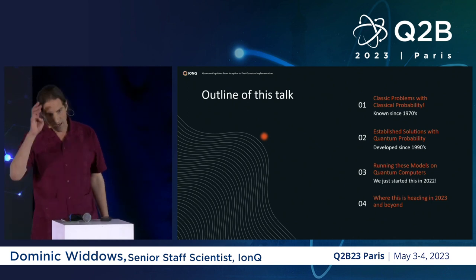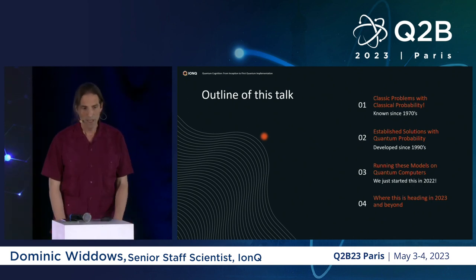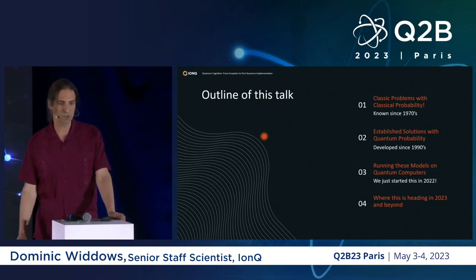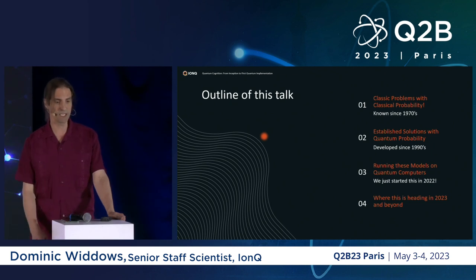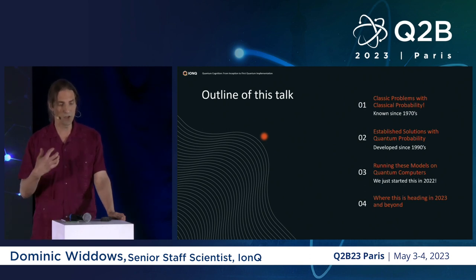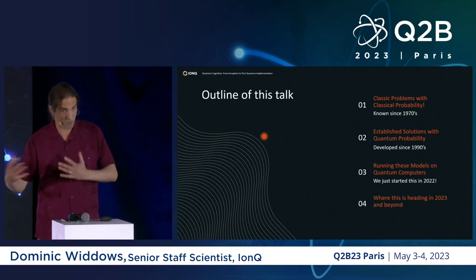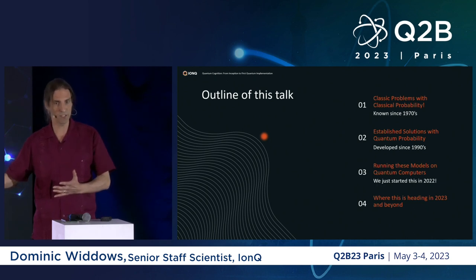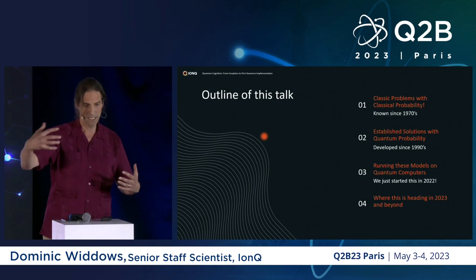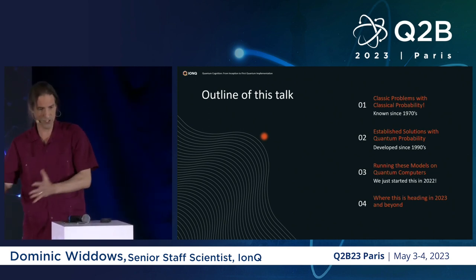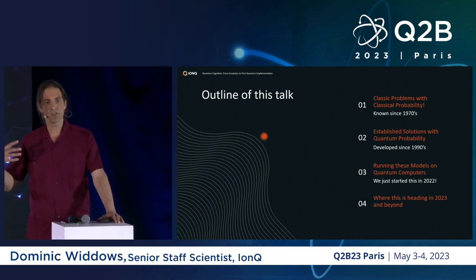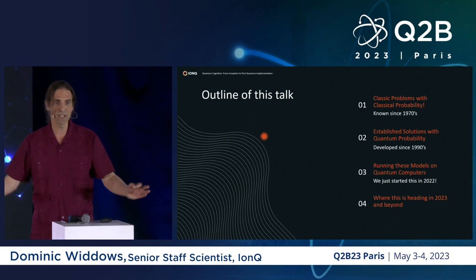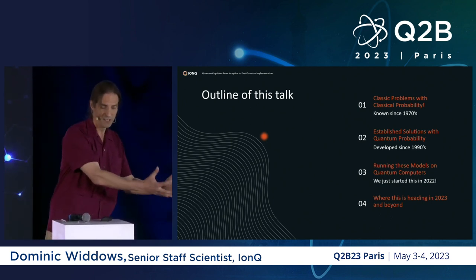When I say 'from inception,' here's the outline: there are problems with classical probability and classical logic that have been known since the 1970s. Quantum solutions have been proposed since the mid-1990s — ones that took quantum probability and said these problems with classical probability might be solvable. And just last year, we got enough hardware together that we can take these models and actually run them on a quantum computer.